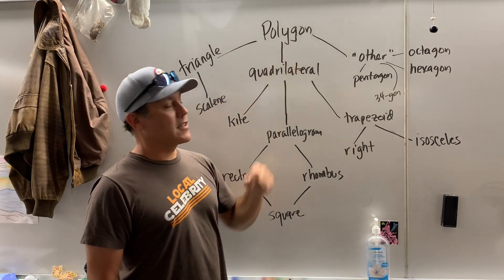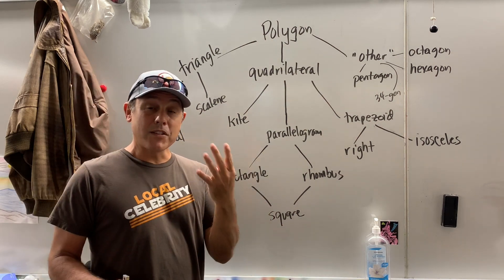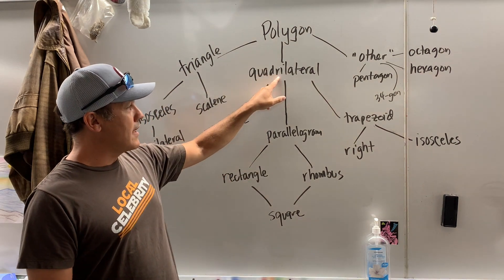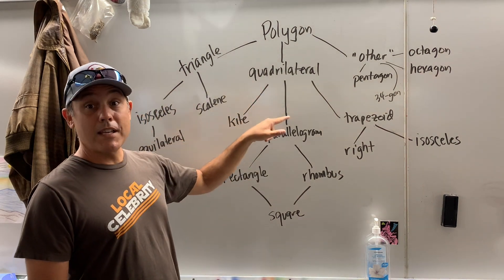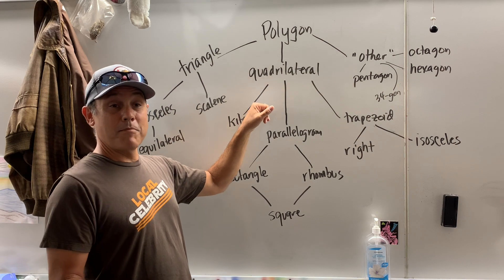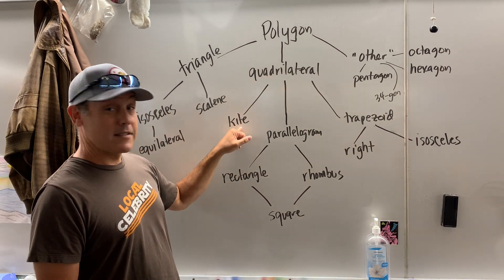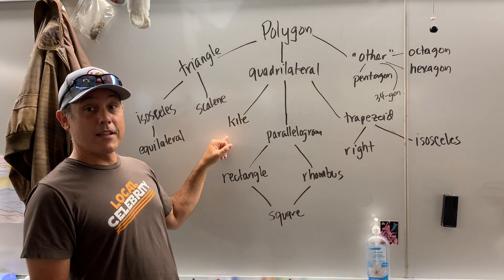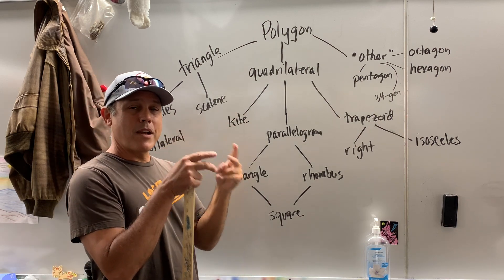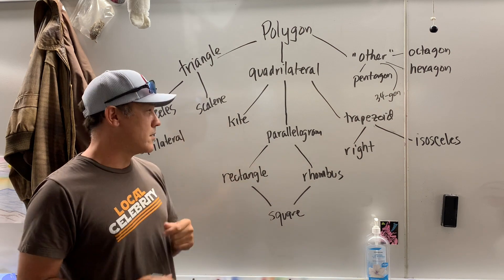Next, the polygon had another kid called the quadrilateral. The quadrilateral has four sides — 'quad,' that makes sense. A quadrilateral had three kids of its own. The first one, some scholars think, may be one of the smarter shapes: a kite. A kite had no kids, so it's left there. A kite just has two pairs of congruent sides, among other things that you'll learn about later.